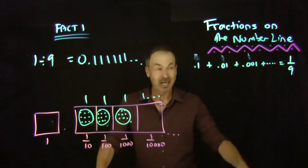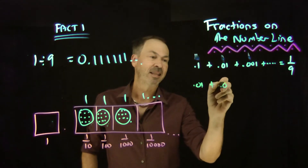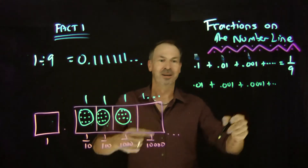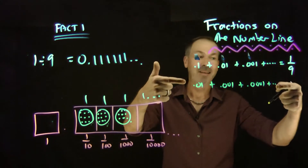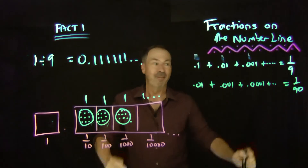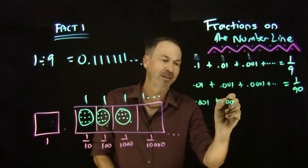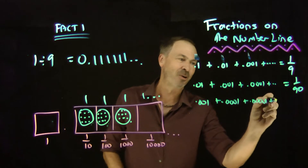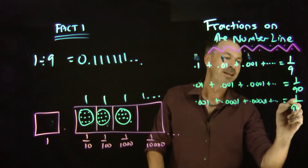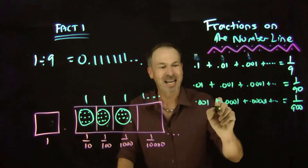Actually, let me divide everything by 10. If I took a hundredth, a thousandth, a ten-thousandth, and so on — taking 1 tenth of all these lengths — I get a total length of 1 ninetieth of an inch of ribbon. If I divide by 10 again: 0.001 plus 0.001 plus 0.001, and so on — those lengths add up to a total of 1 nine-hundredth of an inch of ribbon. And I can keep doing that.